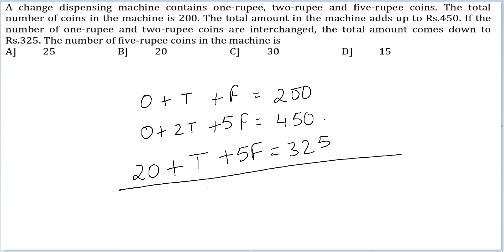This minus this, I get T minus O equals 125. So T minus O equals 125, or T equals 125 plus O.